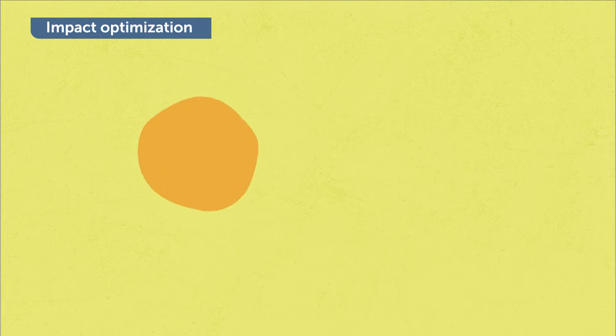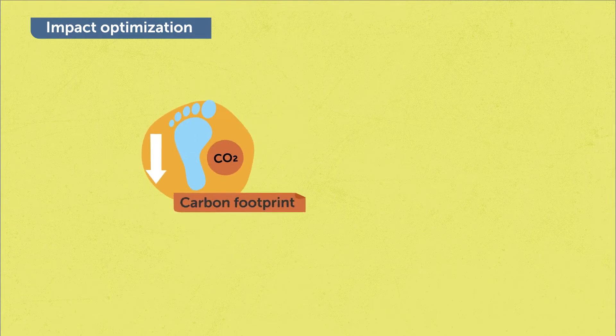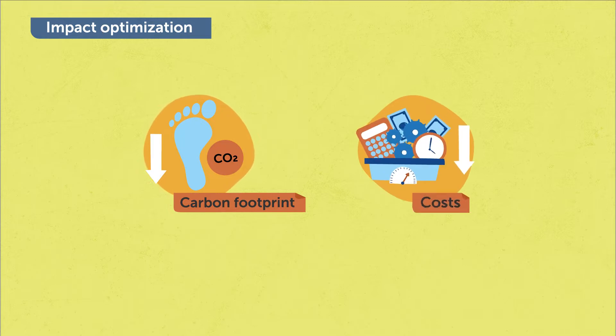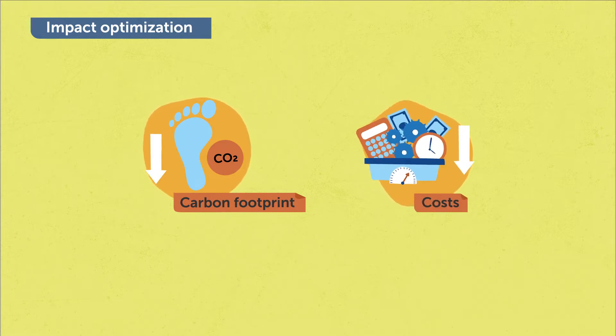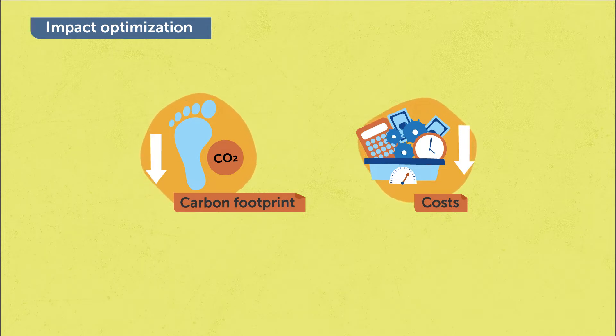And our question is: what should you do optimally? It's a kind of optimization. You want to optimize your impact. You want to minimize your carbon footprint as far as you can, but also the costs should not be too large that you have to bear. And that's our optimization question — what should you optimally do if you want to reduce your individual carbon footprint?